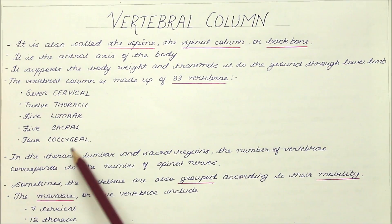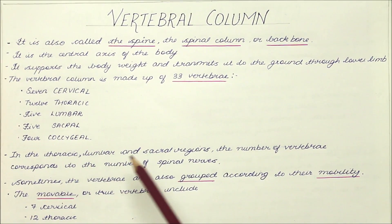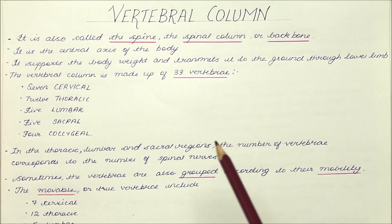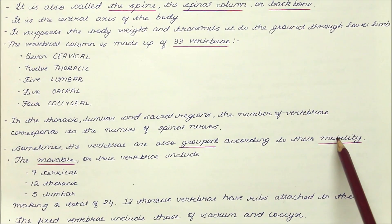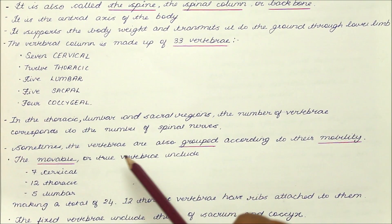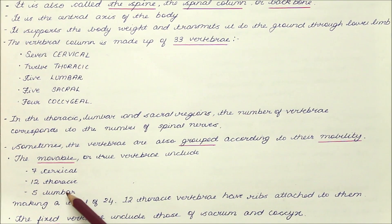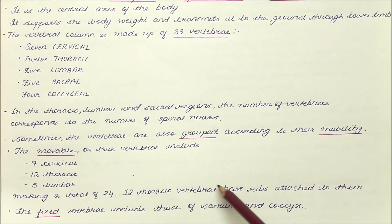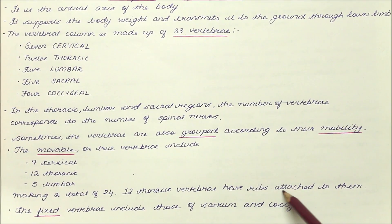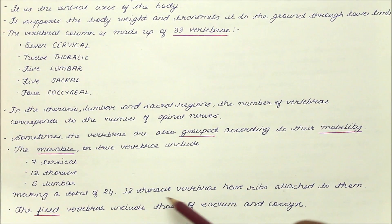In the thoracic, lumbar, and sacral regions, the number of vertebrae corresponds to the number of spinal nerves. The movable or true vertebrae include the 7 cervical, 12 thoracic, and 5 lumbar, making a total of 24. The 12 thoracic vertebrae have ribs attached to them. The fixed vertebrae include those of the sacrum and coccyx.